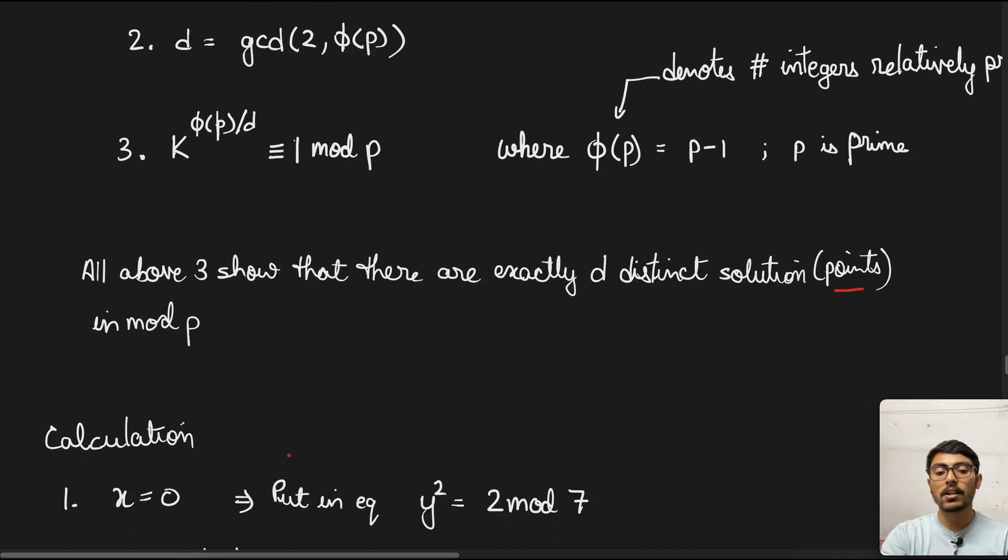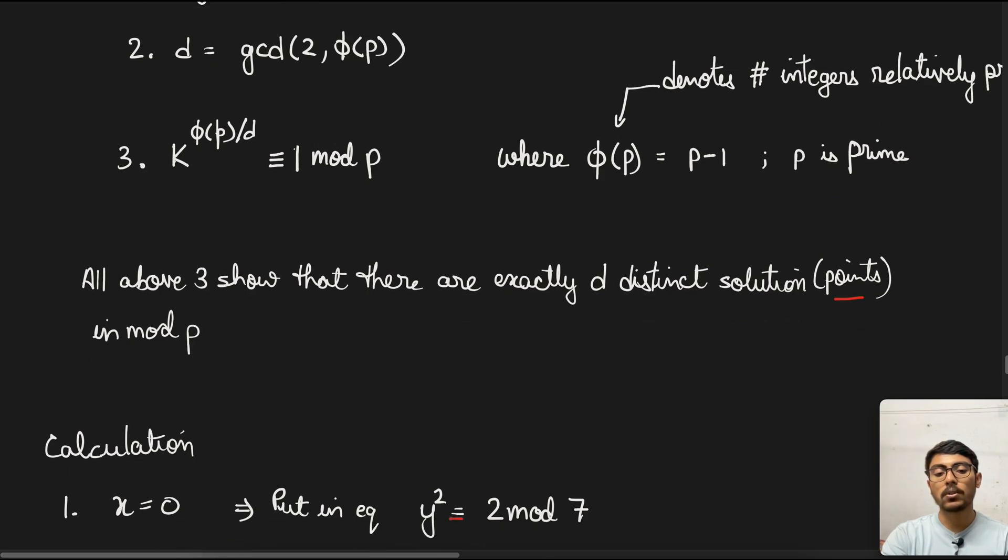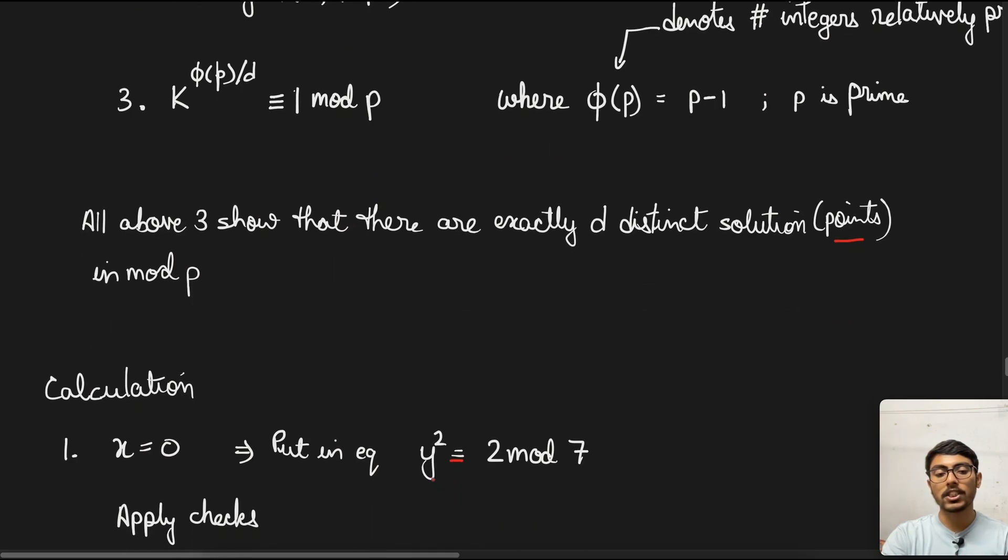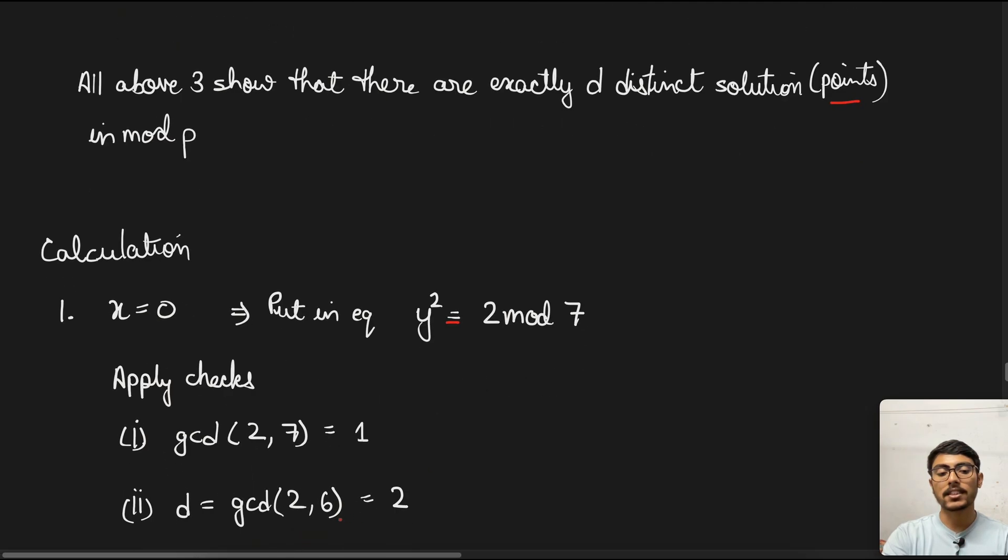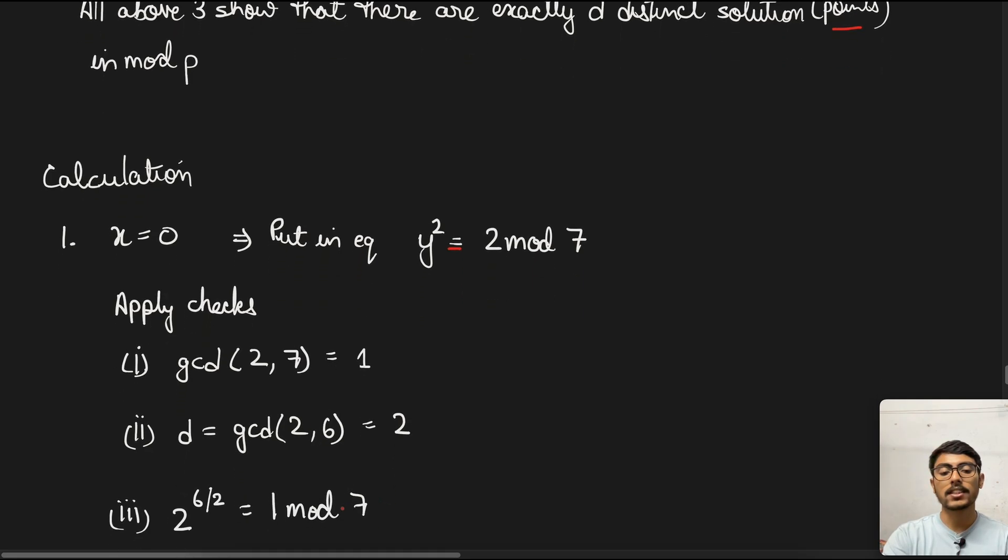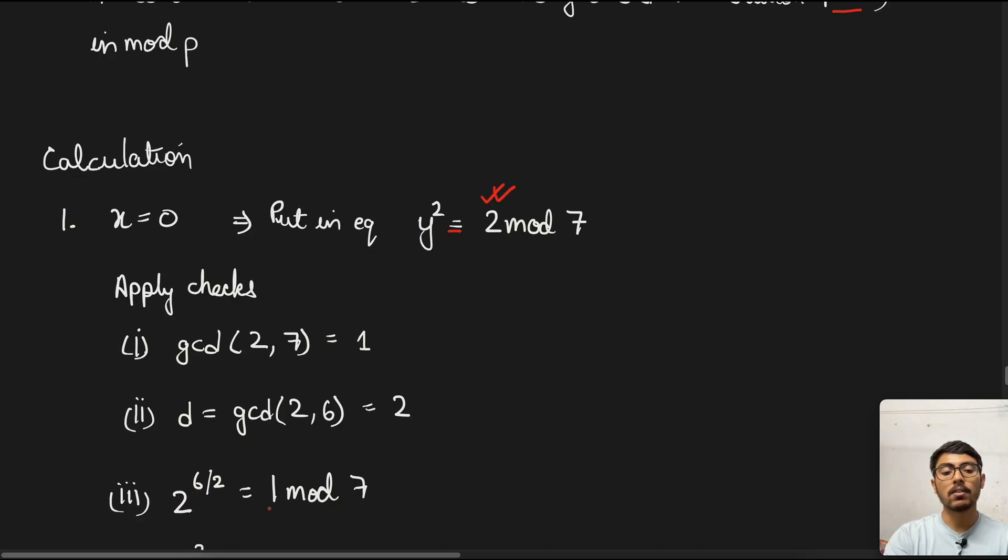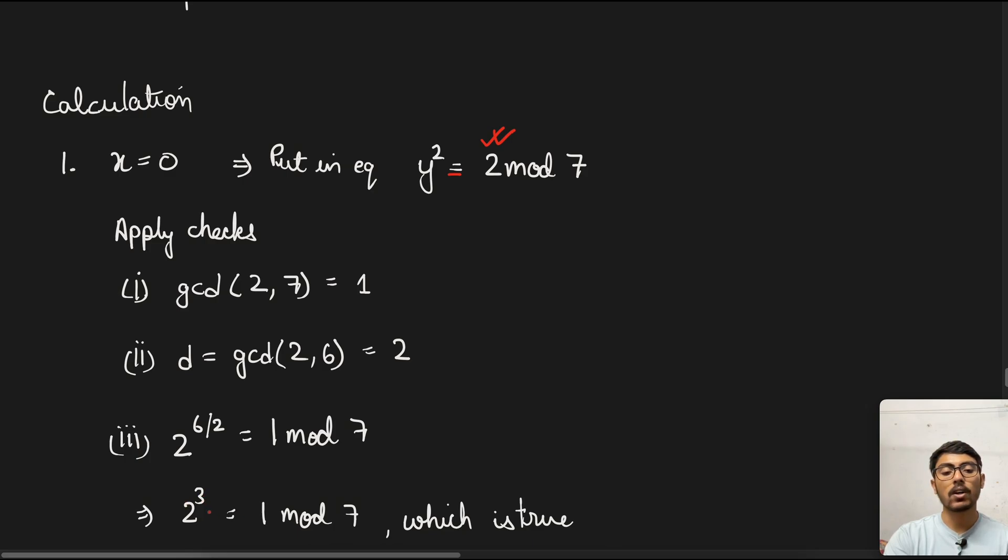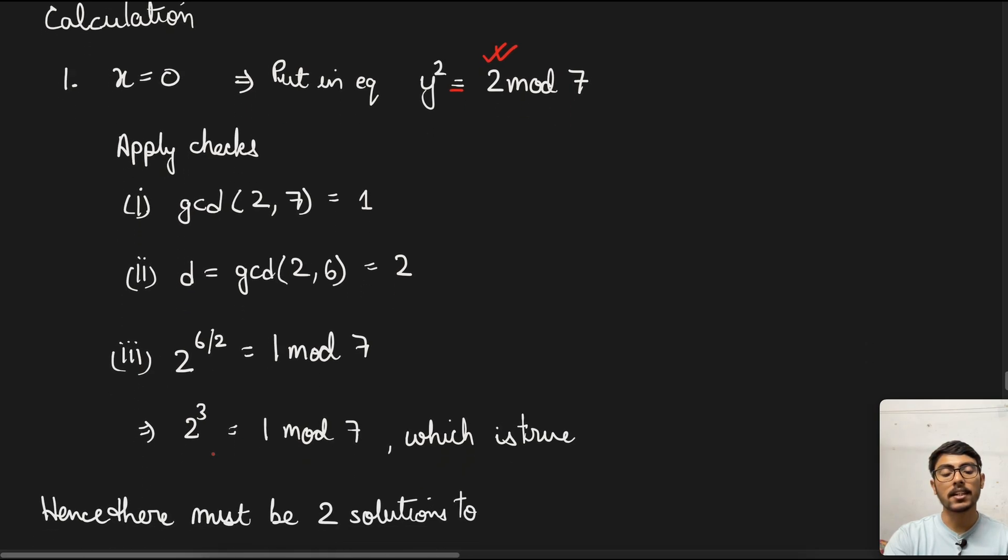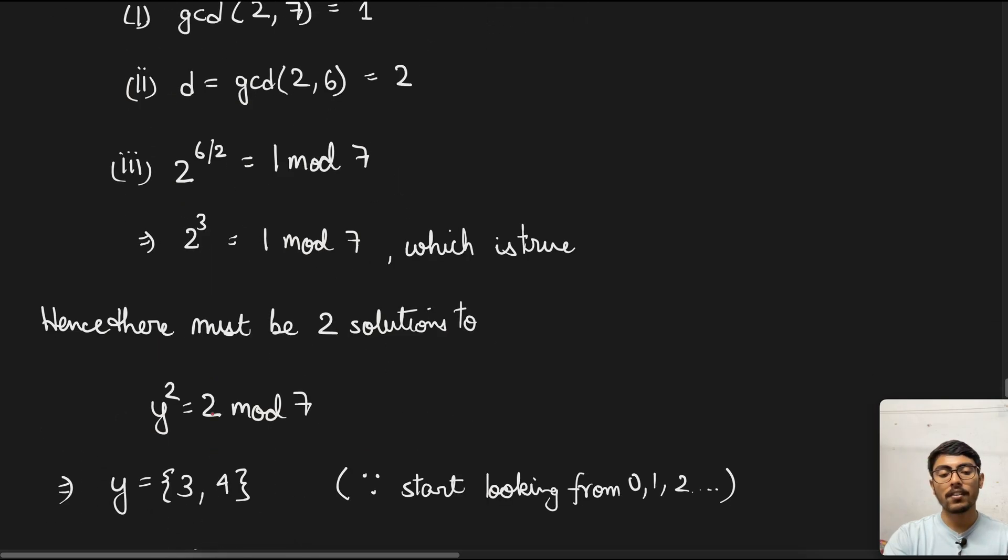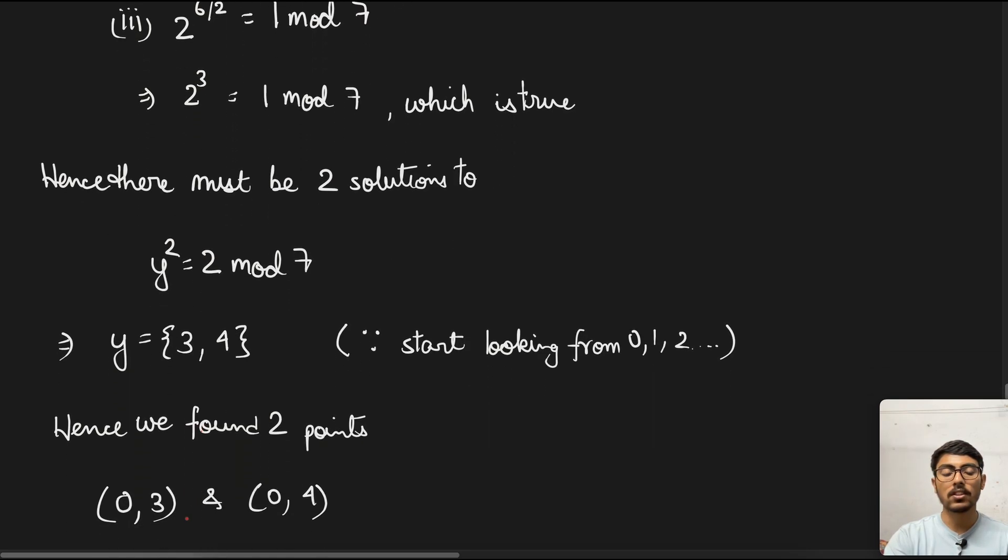Next, we come to the calculation part. First, we take x = 0. We put in the equation of the curve and get y² ≡ 2 mod 7. We apply the checks: First, gcd(2, 7) = 1. Next, d = gcd(2, φ(7)) = gcd(2, 6) = 2. Next, k = 2, so 2^(6/2) = 2³ = 1 mod 7, which is true. Hence, there must be two solutions to y² ≡ 2 mod 7. If we figure out the values of y, they will be 3 and 4. So the points we found are (0, 3) and (0, 4).